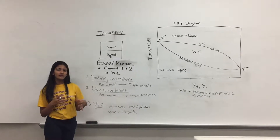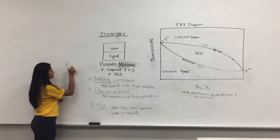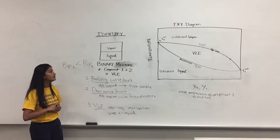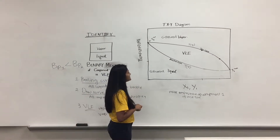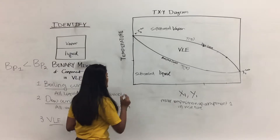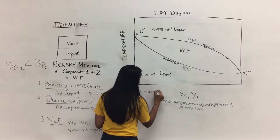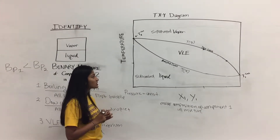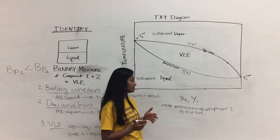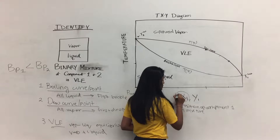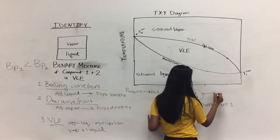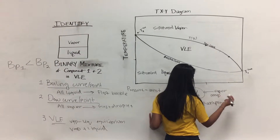Component 1 and component 2 could be anything, but let's say component 1 has a boiling point less than that of component 2, which means component 1 is more volatile than component 2. On the TXY Diagram, the y-axis represents temperature, so temperature is the changing variable, meaning pressure is constant. On the x-axis we have the molar composition of component 1 in the mixture. x gives us the liquid composition and y gives us the vapor composition of component 1.